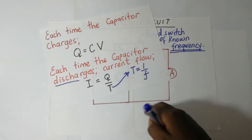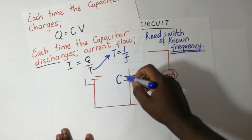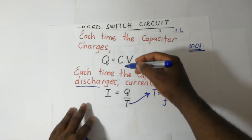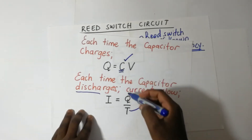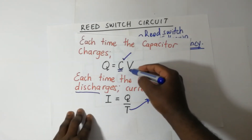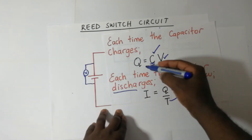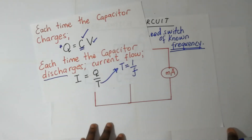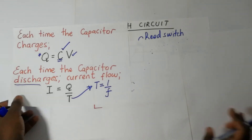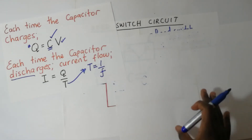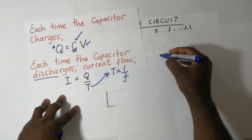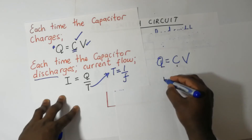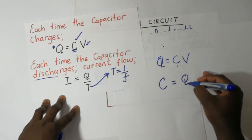Our aim is to find the capacitance of this capacitor using the reed switch. We can work with these two expressions to get the value of C. From Q = CV, making C the subject of the formula gives C = Q divided by V. We know V from the voltmeter in the experiment, but we do not know Q directly.